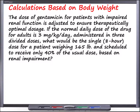The first calculation we're going to work through is based off of body weight. In this example, the dose of gentamicin for patients with impaired renal function is adjusted to ensure therapeutically optimal dosage. Some background: gentamicin is an aminoglycoside class of antibiotic, which means it kills bacteria. It is most effective against aerobic gram-negative bacteria — good to know that this is an antibiotic that's going to kill some bacteria.